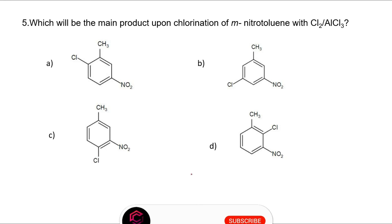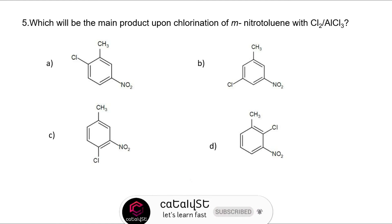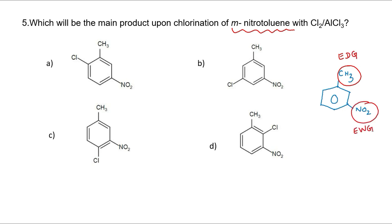Question number five: what will be the main product upon chlorination of meta-nitrotoluene with Cl2 and AlCl3? In meta-nitrotoluene, the CH3 group is electron donating and the NO2 group is electron withdrawing. When groups have different directing natures, the electron donating group directs the incoming electrophile towards ortho or para position. Since the para position is directly hindered by the larger NO2 group, the electrophile is directed towards the ortho position to the methyl group. The correct answer is option A.